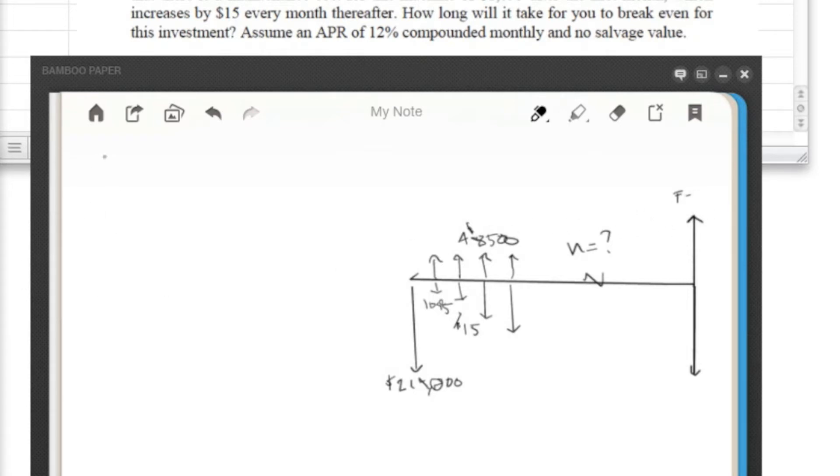Alright, so basically how we want to solve this is to find the n value where all of these payments on the bottom—maintenance, the initial costs—are even and break even with this value of incoming cash flow of $8,500 a month, given our interest rates and everything else. So let's go ahead and get organized.